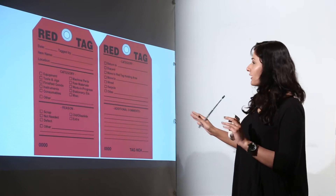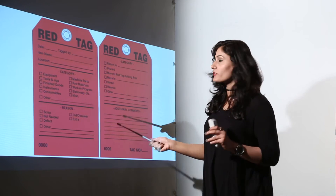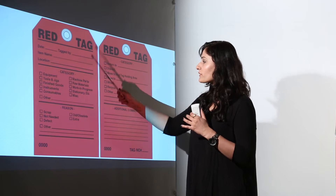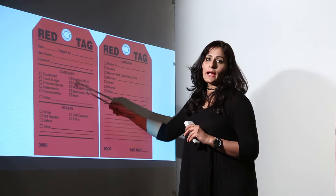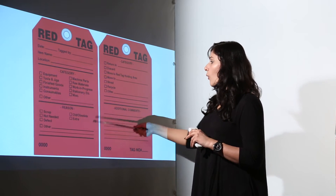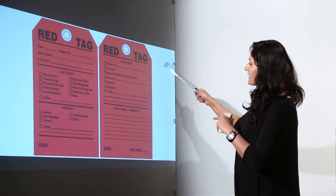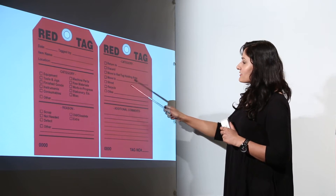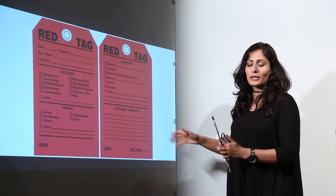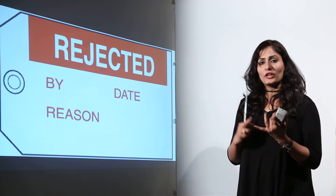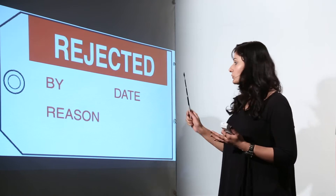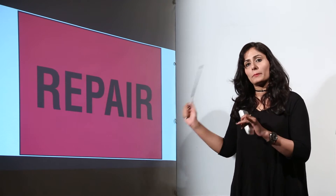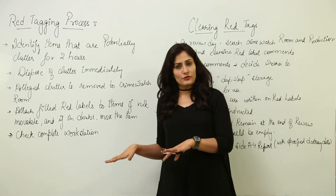The commonly used general red tags include fields for date, tagged by, item name, location, and categories such as equipment, tool, finished good, etc. There is also a reason field — not needed, defective, old, extra, or other reasons — and a 'Return to' field for actions like discard, move to red tag holding area, recycle, or additional comments. There is also a red tag for rejected items or machinery, and one for items that need repair, which is either stuck or placed on the particular item requiring repair.